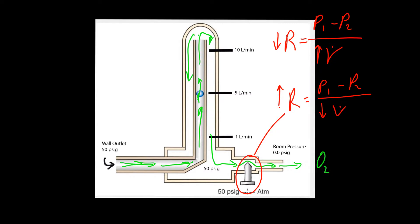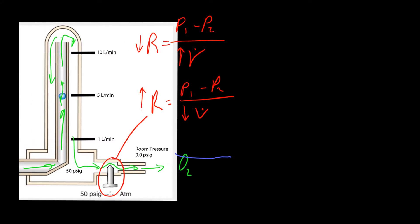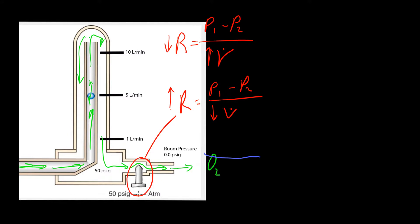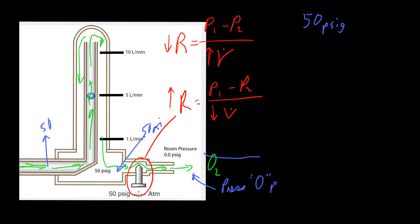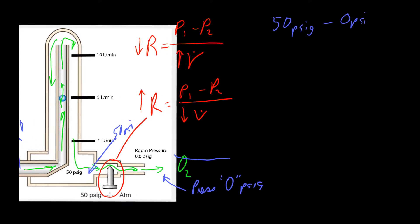The pressure gradients across the resistor are important to note because they show us what's going on with the system and allow us to make calculations. We know that on one side of the resistor we have 50 psig — that's our P1. And once the gas gets past the resistor, the pressure is effectively zero, or atmospheric pressure — zero psig. So our pressure gradient is always going to stay the same; it's always going to be 50.